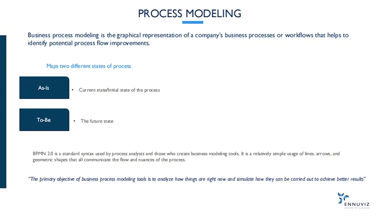There are two different states of a process. One is as-is, and the other is to-be. As-is indicates the initial state of the process, and to-be represents the future state.